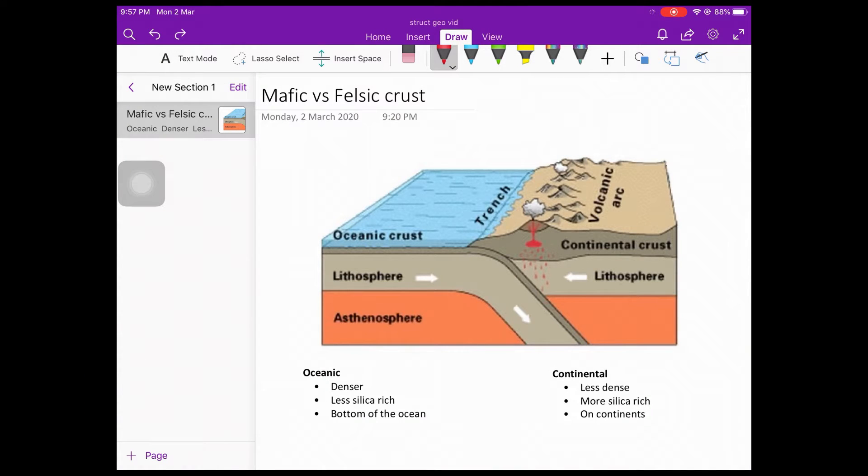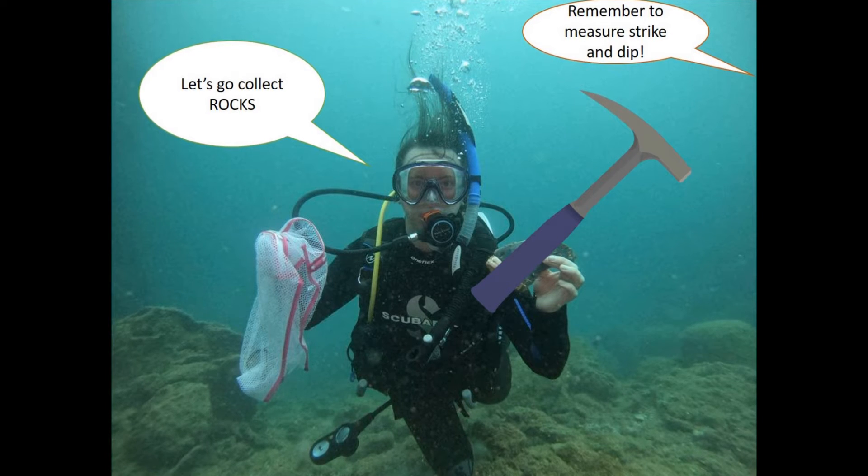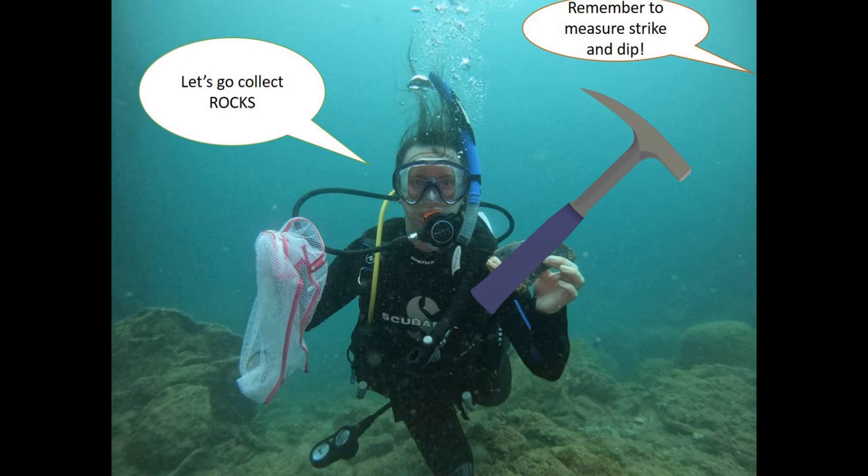As most of us know, the Earth's crust can be characterized into two different types: the more silica-rich, less dense continental crust, and the less silica-rich, denser oceanic crust. The oceanic crust, as its name suggests, lies at the bottom of the ocean. So, have you ever wondered, how do geologists study the oceanic crust?